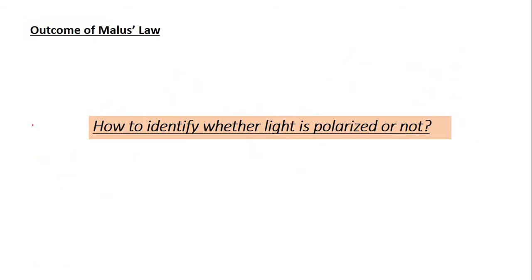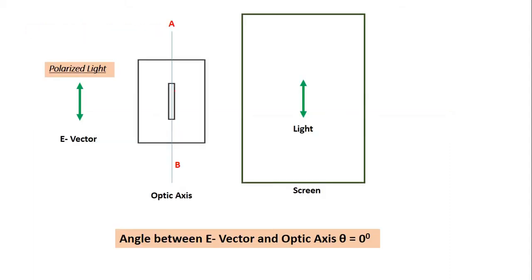So how would you identify whether the light is polarized or not? For that I have a very beautiful animation. See, this is a polarized light. That means in this wave all the vectors would be aligned in this particular direction.